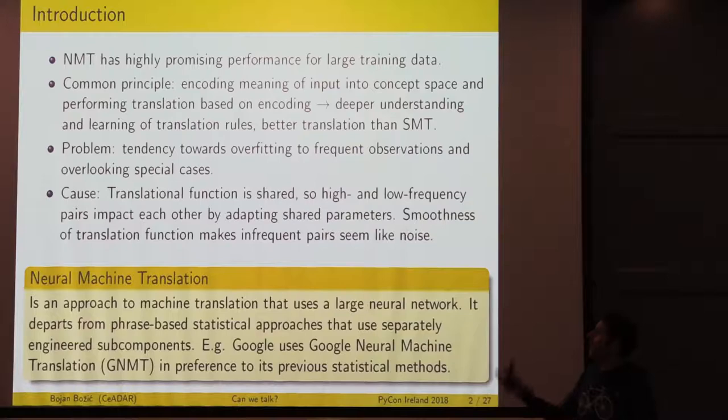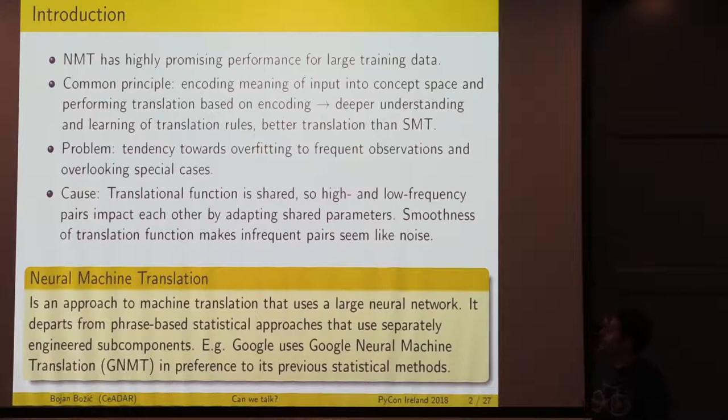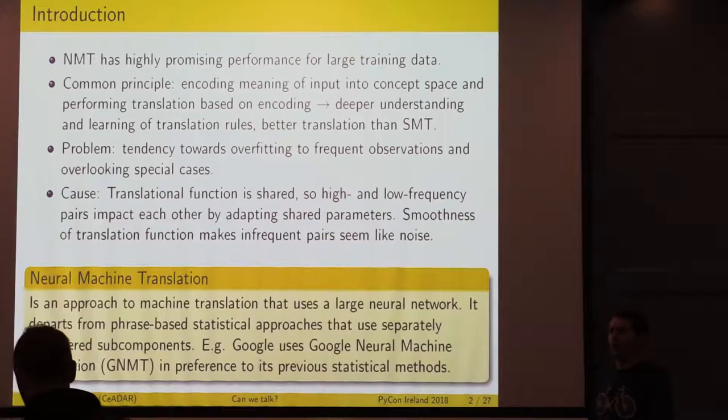The common principle is we encode the meaning of the input into a constant space. We use an encoder to model the deeper understanding and learn the rules of translation. It's basically the closest thing to an actual human being learning a language. But there is a big problem, which is overfitting.